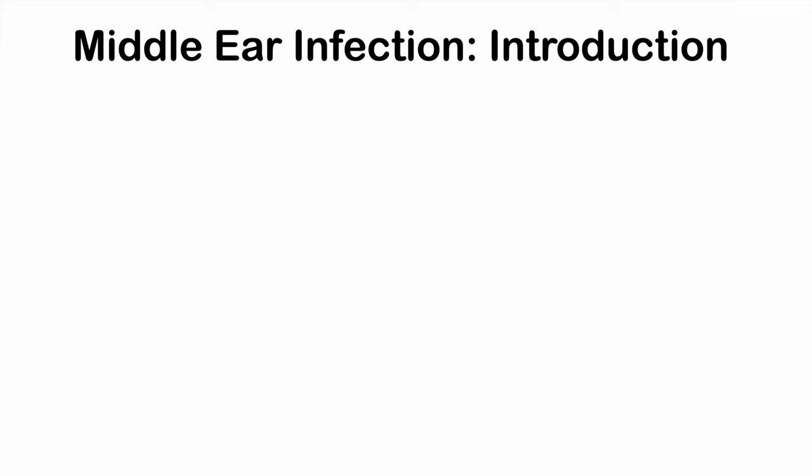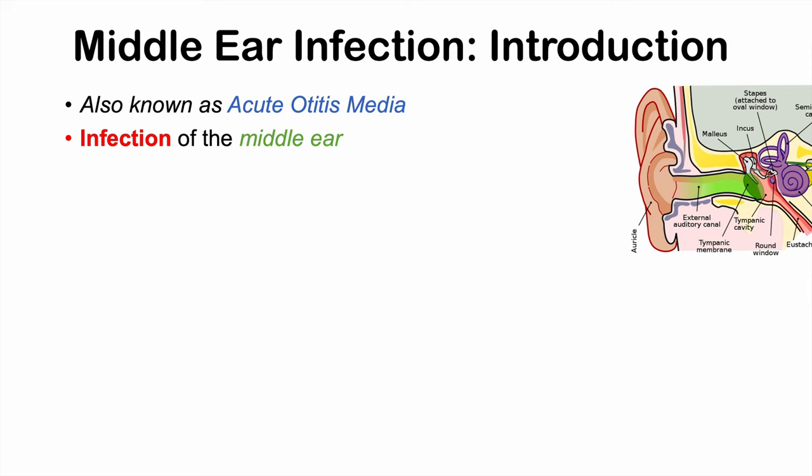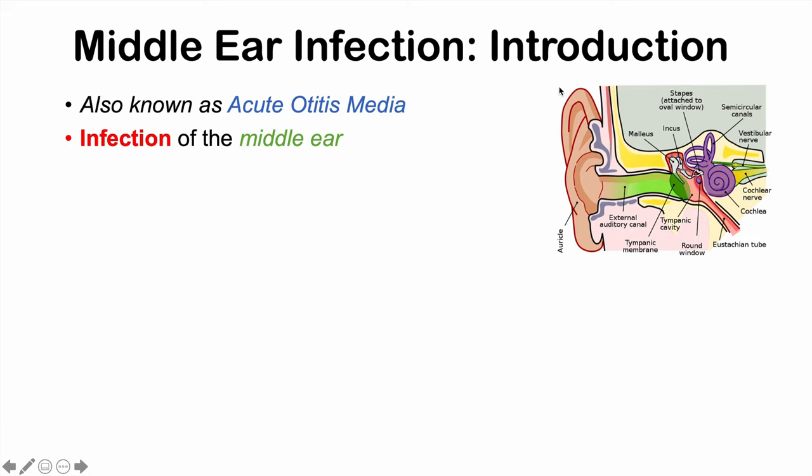A middle ear infection is also known as acute otitis media. As its name suggests, it is an infection of the middle ear. If we look at this diagram here, here is the anatomy of the ear — the external ear flap, external auditory canal, and in this area here is the middle ear. Past the tympanic membrane or the eardrum, inside this area, is the middle ear.